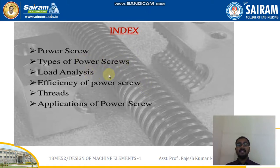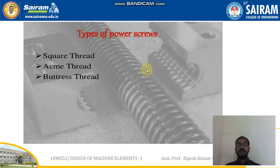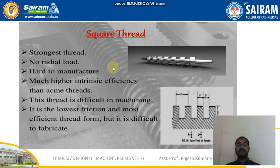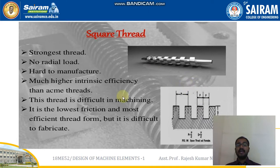In this video we will be discussing: types of power screws, load analysis, efficiency of power screw threads, and applications of power screws. Types of power screws include square thread, ACME thread, buttress thread, and ISO trapezoidal thread. Among all the different types, as you can see even in the pictorial view, the square thread is the strongest thread and there is no radial load on it. It is very hard to manufacture since it breaks easily, but it has much higher intrinsic efficiency than ACME threads.